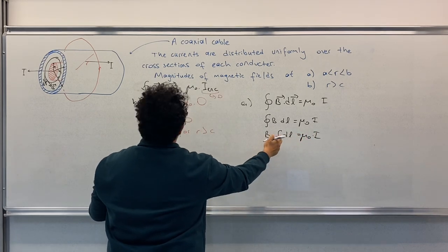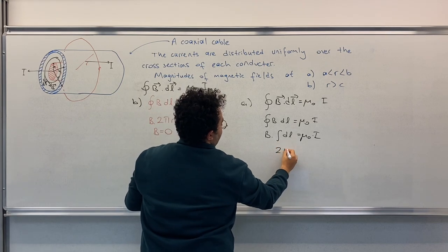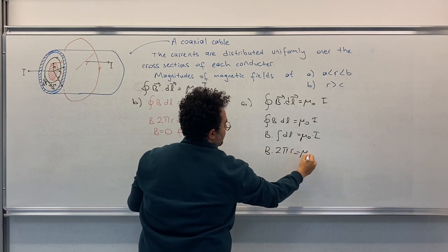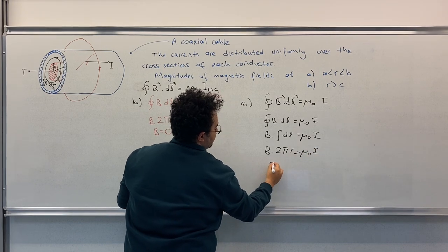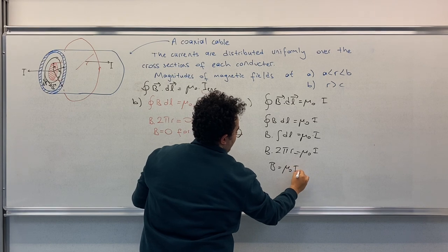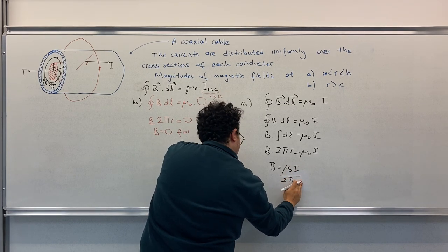And this is just L, which is 2πR, equals to μ₀I. And hence, B equals to μ₀I over 2πR.